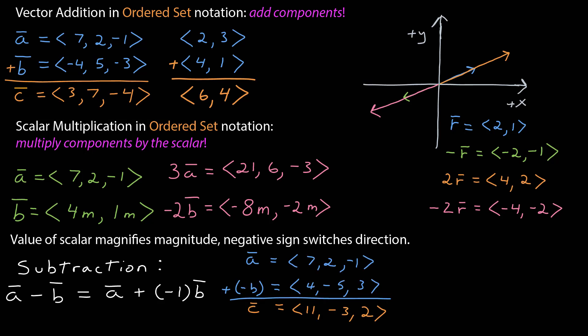For example, if I take the vectors I had above and I subtract them instead, b times a negative 1 is positive 4, negative 5, 3. So then when I add it to a, I get 7 plus 4 is 11. 2 plus a negative 5 is negative 3. Negative 1 plus a 3 is 2.